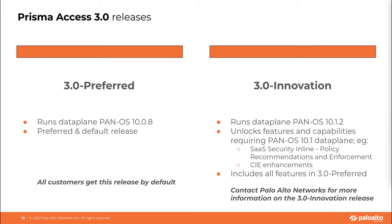One important thing: upgrading directly from 2.0 or 2.1 to 3.0 is not supported. You should first upgrade to 2.2. If you want to upgrade to 3.0 Innovation, you can reach out to your Palo Alto Networks account representative and submit a request. This request will be reviewed internally and they will provide you the guidelines.